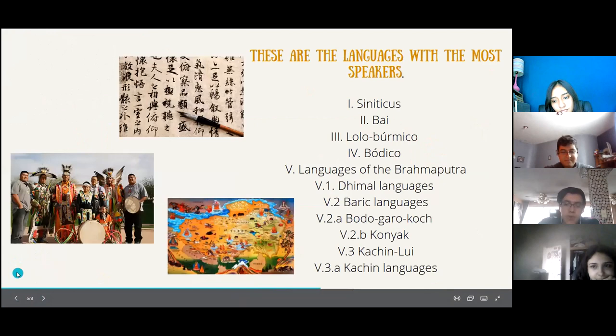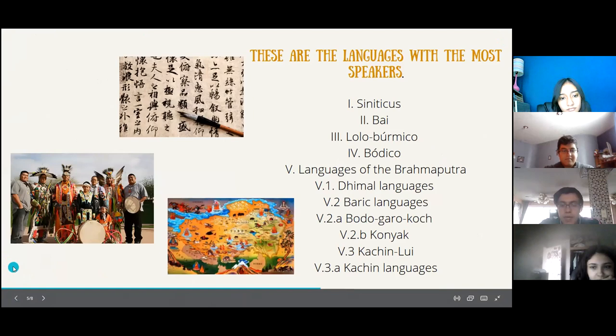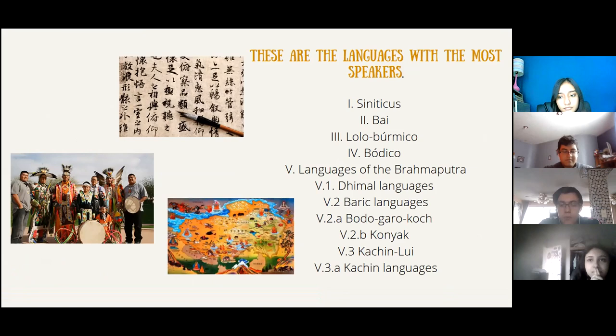There are nine groups that are considered the main ones: the Chinese group, Karenic group, Tibetan-Himalayan group, Bahin Bayou group, Arbor Miridathla group, Kachin Lui group, Lolo-Burmese group, Vodogaro group, and Kukichin Naga group. As you can see, these are the languages with the most speakers.